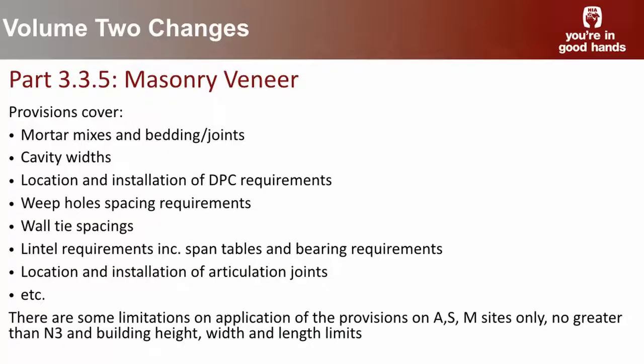With the publication of AS 4773 Parts 1 and 2 — masonry for small buildings — this standard was put into the code and a decision was made to remove that content from the acceptable construction practice provisions and just rely on the standard. This was a pressure point where HIA and others said enough is enough to the ABCB. The ABCB listened, and for the 2019 code, new provisions have been reincorporated for masonry veneer construction and for isolated and engaged piers. The standard is still referenced, giving another deemed-to-satisfy compliance option.